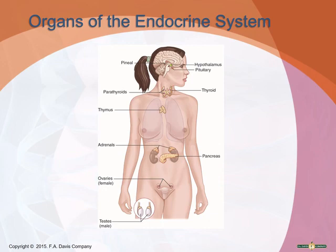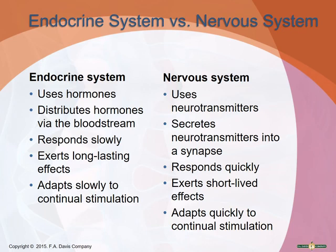Both the nervous system and the endocrine system control most of what your body does, but they do it in different ways. The endocrine system uses hormones distributed into the bloodstream; the nervous system uses neurotransmitters released into a synapse. The endocrine system has a slower response but a longer-lasting effect, whereas the nervous system is very quick but its effects are short-lived and can adapt rapidly.